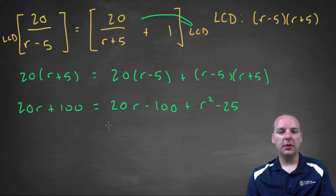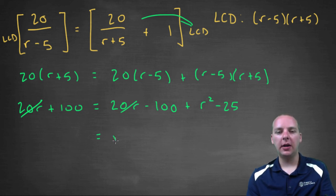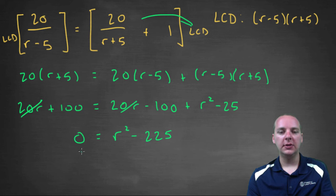Alright, clean this up a little bit, we can subtract 20 r from both sides. Let's see, we've got r squared, that's already positive, so let's leave it on the right. We have minus 100, minus 25, which is minus 125, minus another 100, which would be minus 225, equals 0.